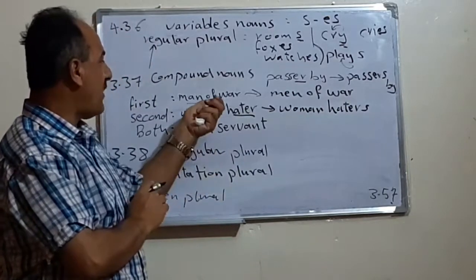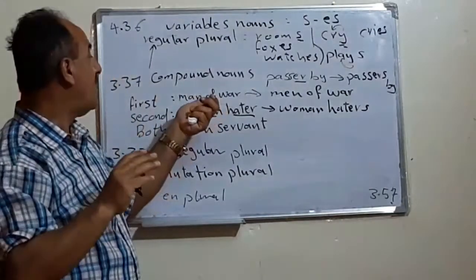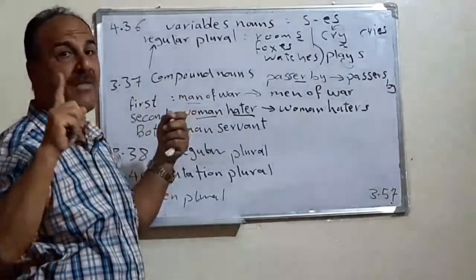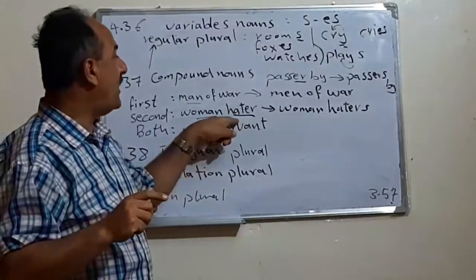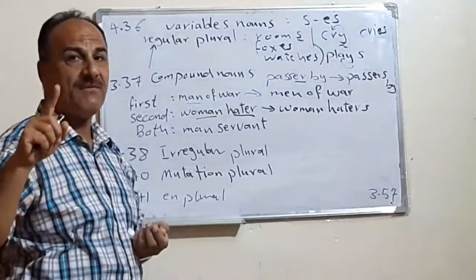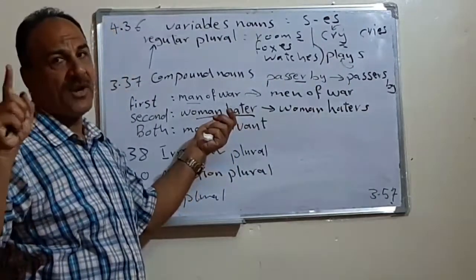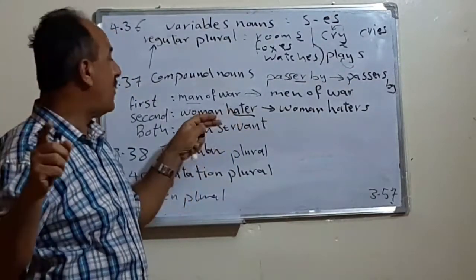We change the second part. Here we have two parts and we change the second. The first one, mother-in-law, consists of three elements. We change the first one. We say mothers-in-law. Here also we change the second one. For example, fountain pen, we say fountain pens. Or boyfriend, we say boyfriends.